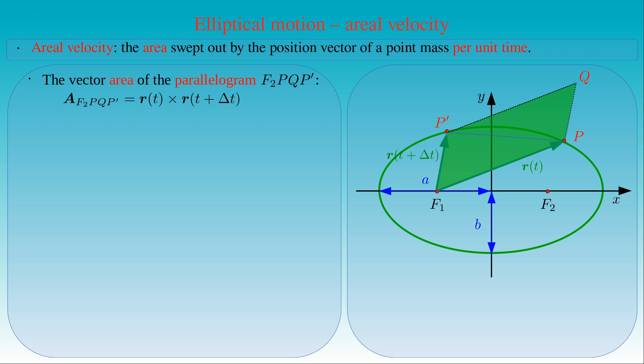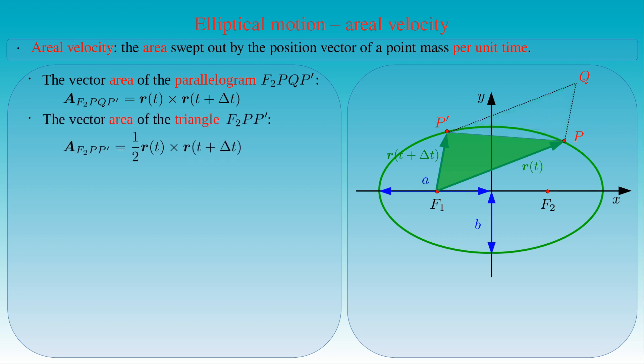Then the vector area of the triangle F2, P, P' is the half of the one of the parallelogram. If delta t tends to zero, then the vector area of the triangle will approach the area swept out by the position vector during the time interval delta t.